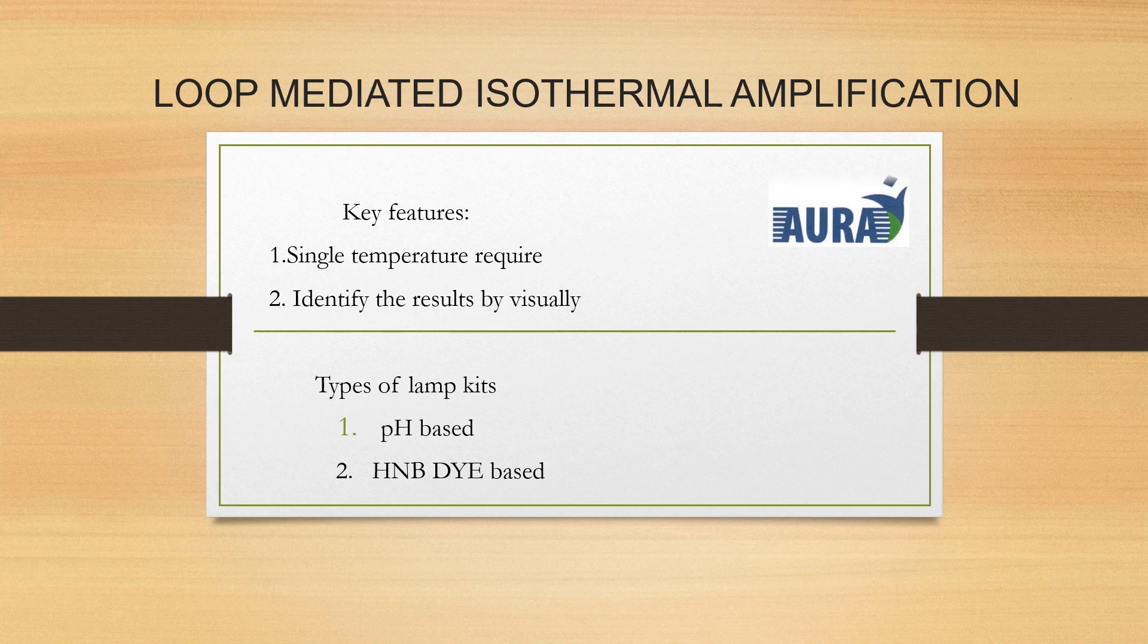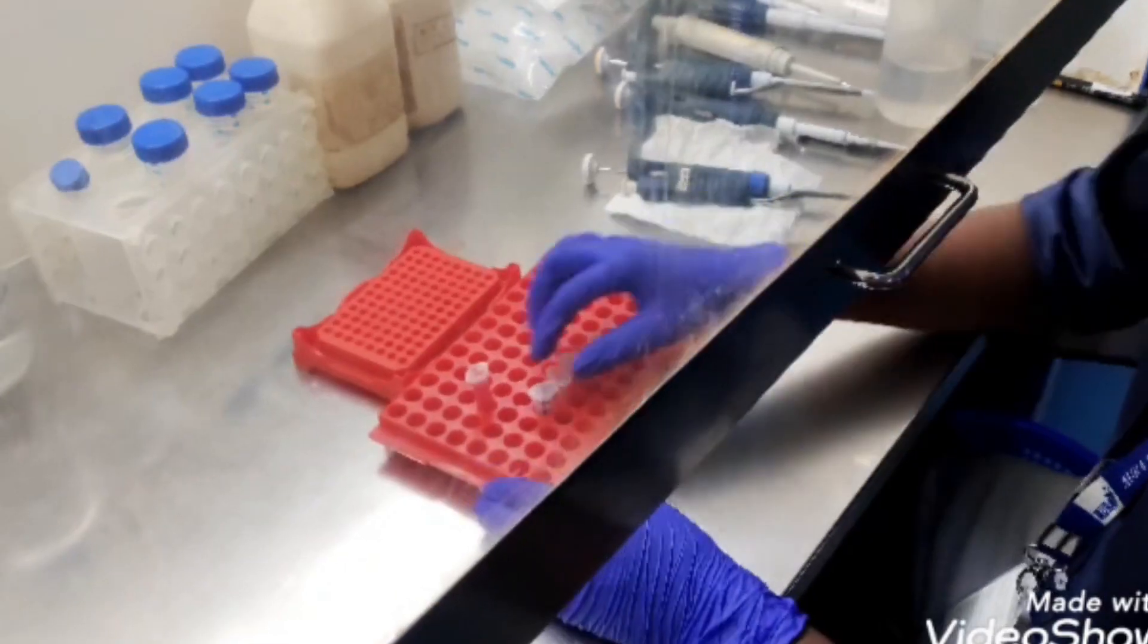For visual color change, we developed two types of LAMP kits. One is calorimetric based LAMP kit and second one is HNB dye based LAMP kit.